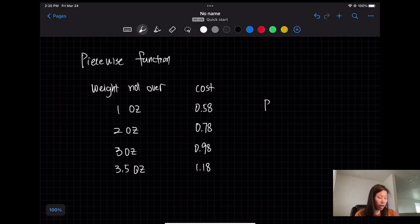So we know that the price equals 58 cents if the weight is less than 1 ounce, right? And we know that the price is 78 cents if the weight is between 1 and 2 ounces, but not including 1 ounce, because if it's 1 ounce they're going to charge you 58 cents.